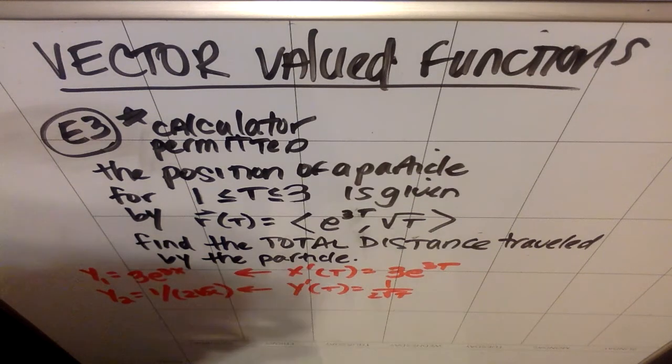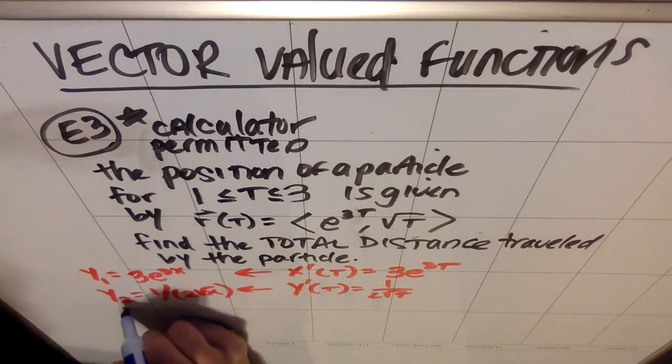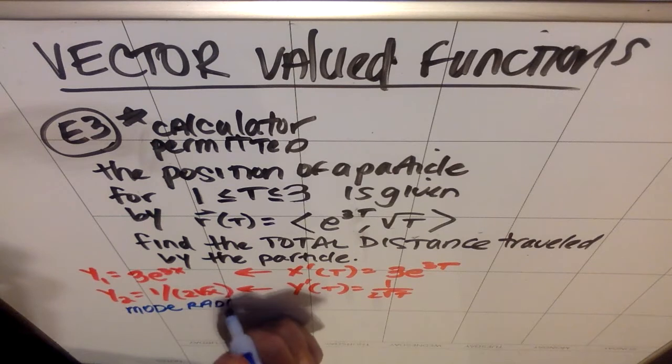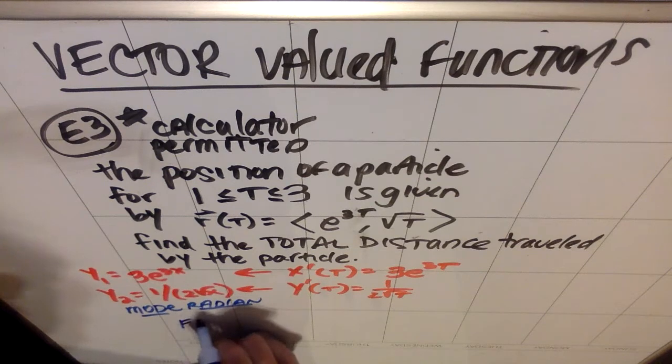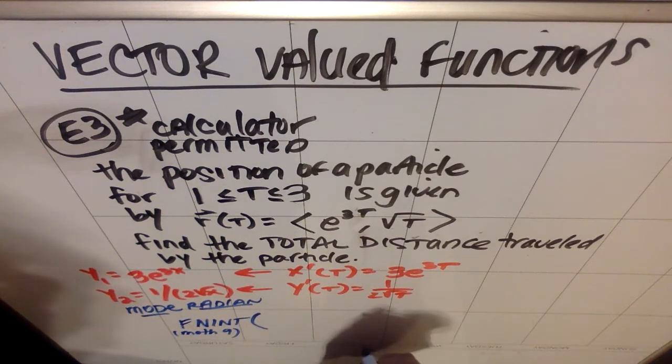So then what I'm going to type in my calculator after I've done that, do make sure that your mode is radian. I was doing some pre-calc before this and I was in degree mode and it messed up my world for a sec. So make sure your mode's radian. I'm going to then press math 9 in my calculator, which is going to give me function integrate. So again, that's the math button and then 9. And then inside there, I'm going to put the thing I want to integrate.